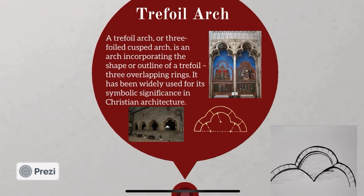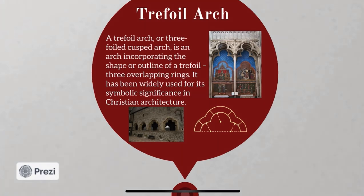And then came the trefoil arch or trefoil cusped arch. It is an arch incorporating the shape or outline of a trefoil — three overlapping rings. It has been widely used for its symbolic significance in Christian architecture.